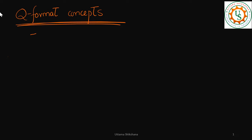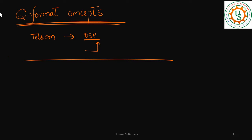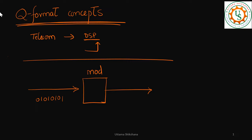This is very important for people who are working in the telecom industry and who are working on DSP-based platforms and writing code on DSP chips. Let us see why we need this kind of Q format. In communication, we have a modulation block — before this block we deal with everything in terms of bits: zeros and ones.